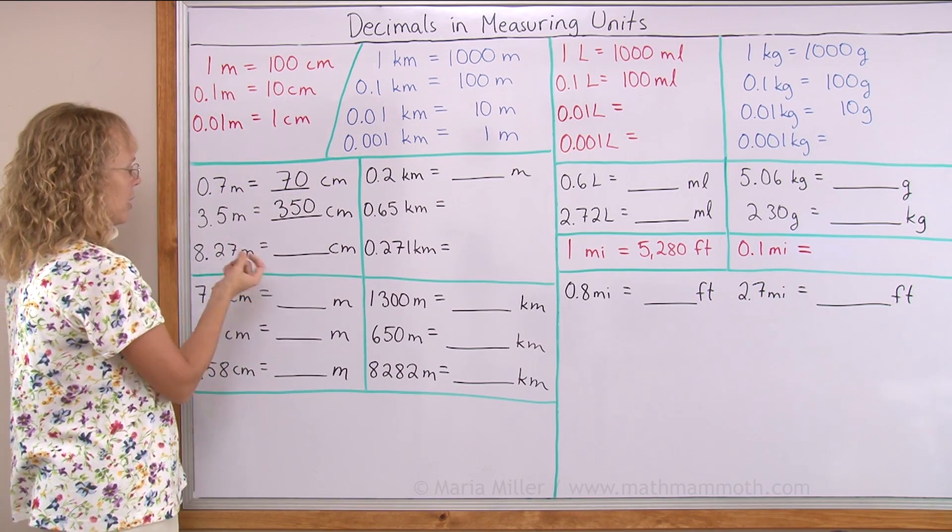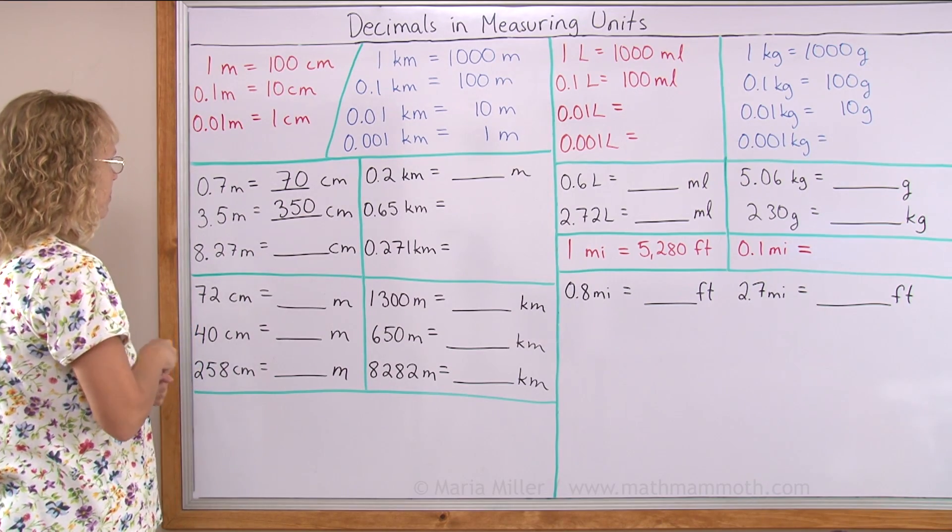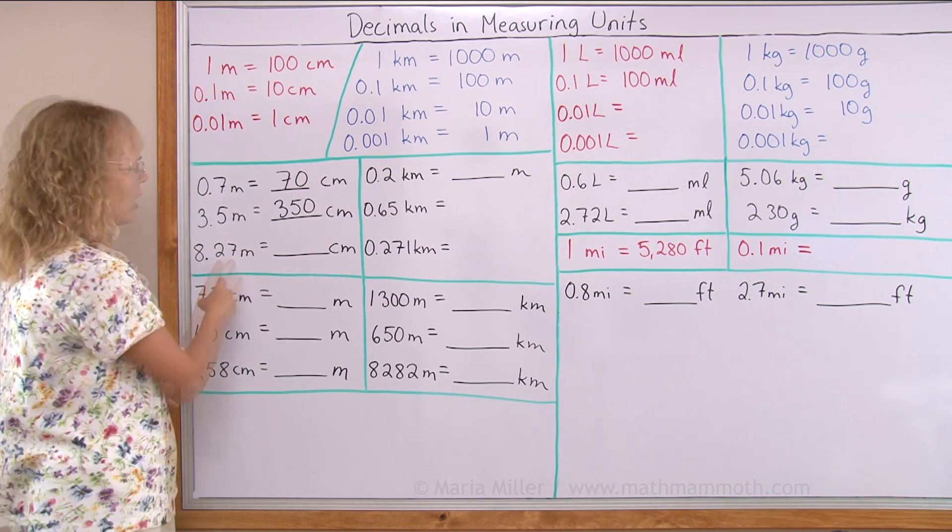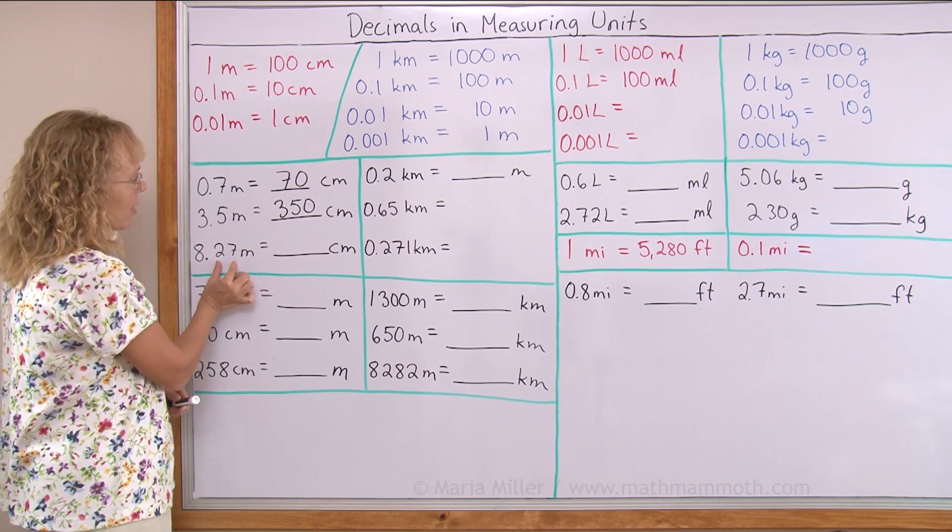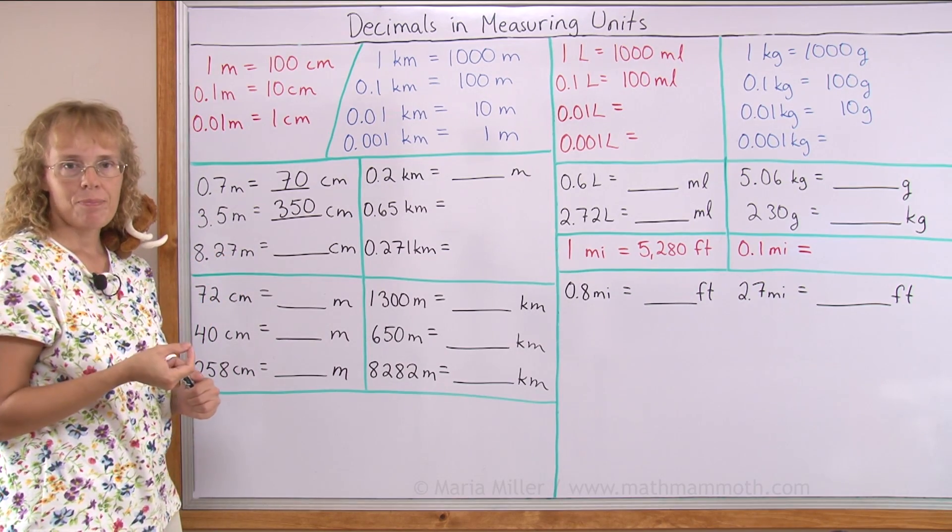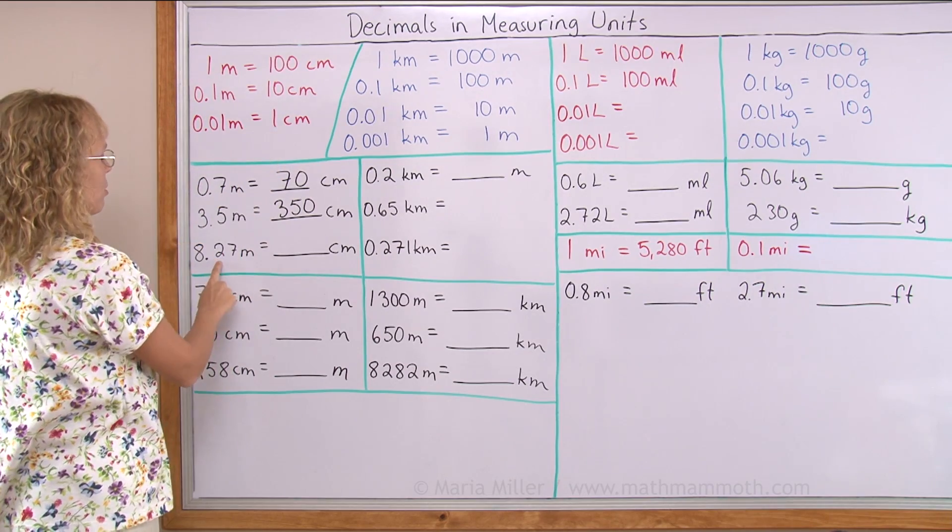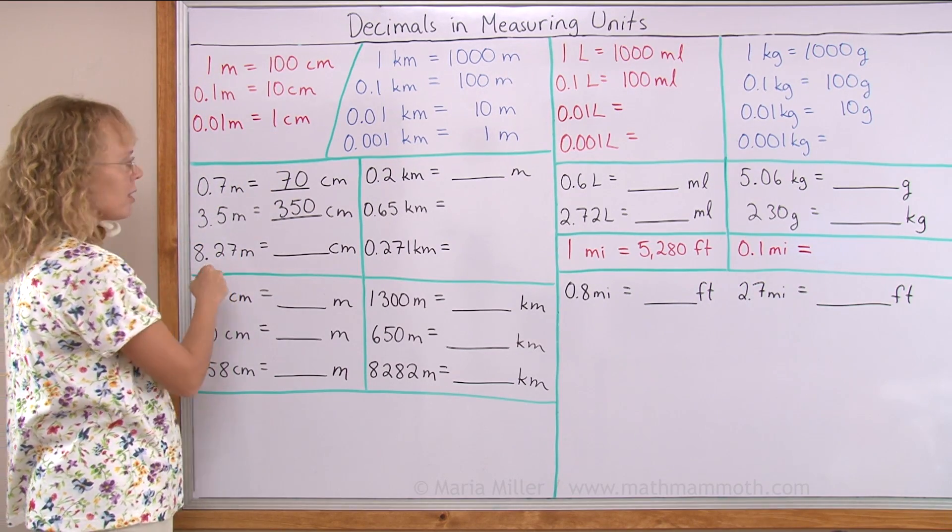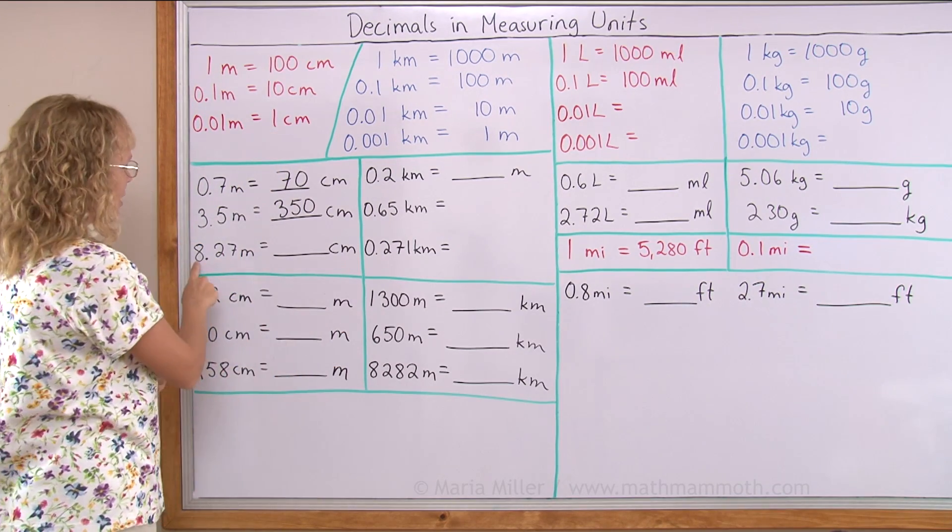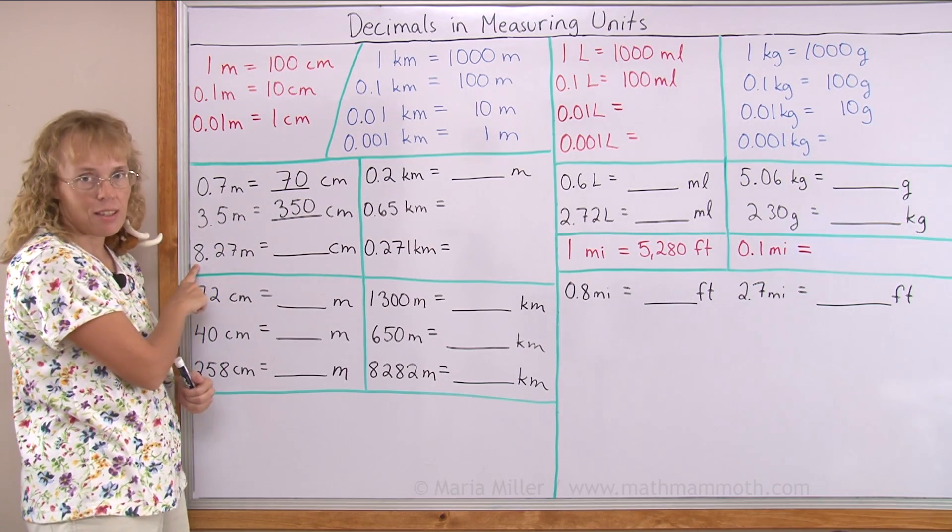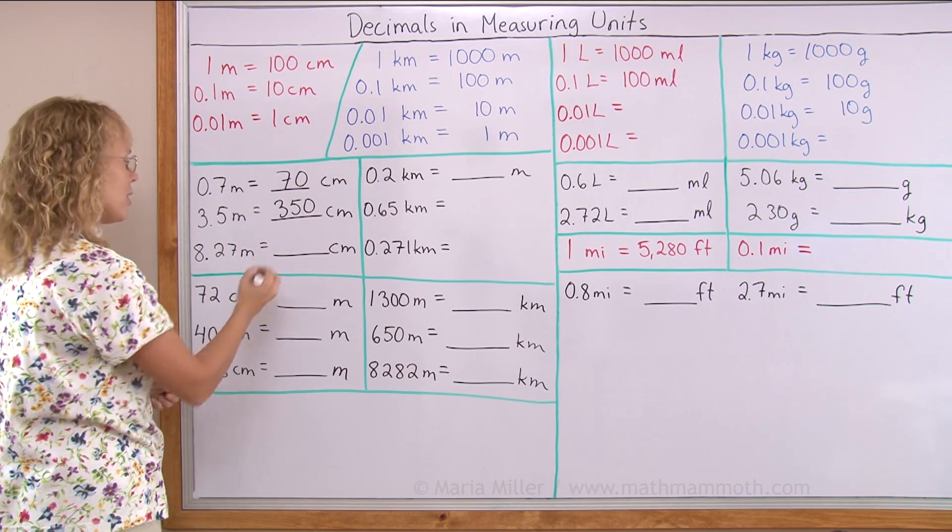8.27 meters. Now we can think of it as 27 hundredths of a meter. One hundredth of a meter is one centimeter. So 27 hundredths of a meter is 27 centimeters. And then these eight whole meters will be 800 centimeters. 827.